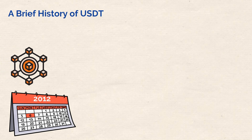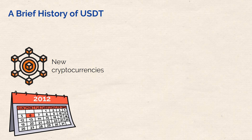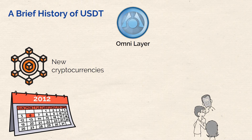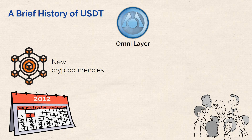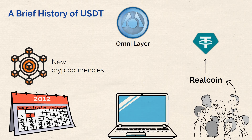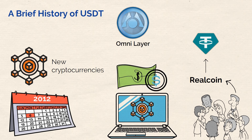Since we're mentioning history, how did USDT get started? Around the start of 2012 came an idea to use the Bitcoin blockchain as a base layer for new cryptocurrencies. This idea culminated in a project called Mastercoin launching in July 2013. Mastercoin is now known by a different name: the Omni Layer. By 2014, employees from Mastercoin launched their own separate platform called RealCoin, which was soon renamed to Tether.